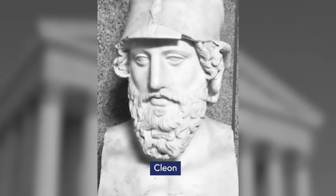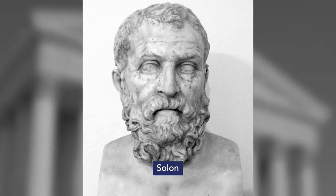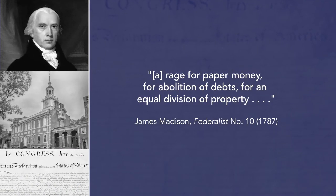Madison believed Athenian citizens had been swayed by crude and ambitious demagogues who played on their emotions. The demagogue Cleon was said to have seduced the assembly into being more hawkish in the Peloponnesian War. Even the reformer Solon, the great lawgiver, canceled debts and debased the currency. In Madison's view, history seemed to be repeating itself in America. After the Revolutionary War, he'd observed in Massachusetts during Shays' Rebellion what he called a rage for paper money, for abolition of debts, for an equal division of property — and that populist rage had led to Shays' Rebellion, which pitted debtors against their creditors.